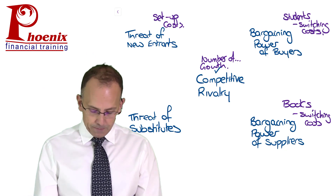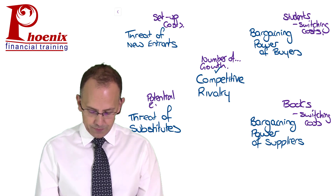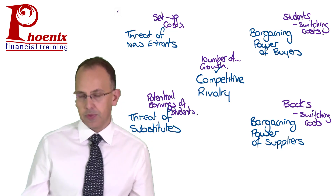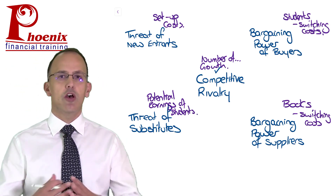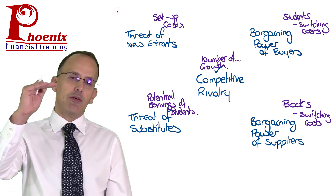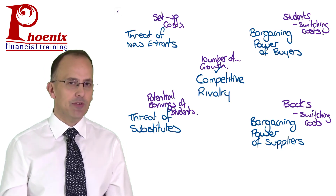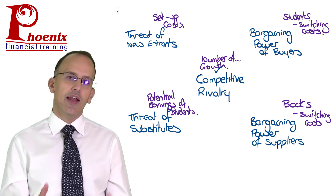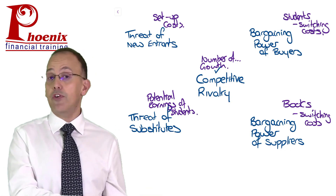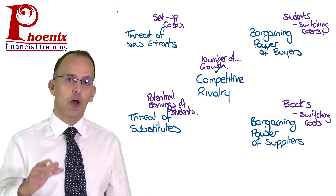The threat of substitutes — I think what I'd be looking at here would be to measure potential earnings of our students. If my students expect to earn $100,000 as a result of becoming qualified, that becomes really, really attractive. But if that value that they would earn starts to go down over time — if you're going to become a qualified accountant and earn $10,000 a year — it's not so attractive anymore. As a result, students might switch from wanting to do accountancy courses to wanting to do something else. The reverse is obviously true — if it looks like people are going to earn loads more money as a result of this, the threat of substitutes would therefore become much, much weaker.